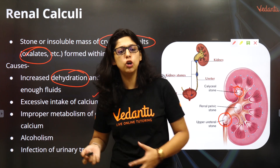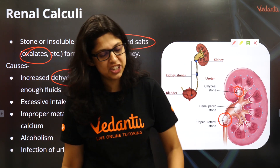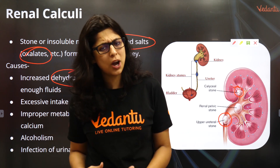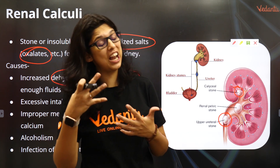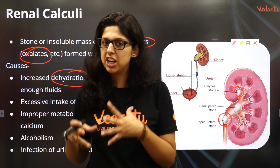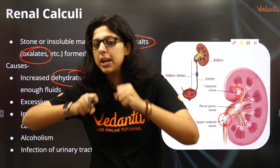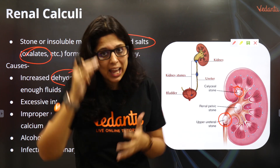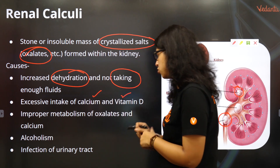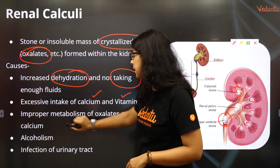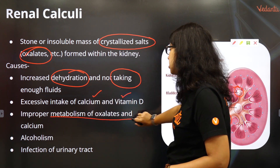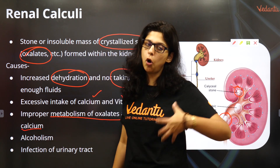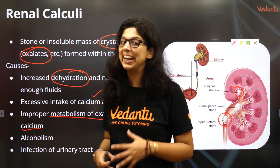Excessive intake of calcium and vitamin D is another cause. Some people have weak bones — osteomalacia or osteoporosis — so doctors advise them to take a lot of calcium and vitamin D. But if water intake is low when urine is formed, they can develop kidney stones.